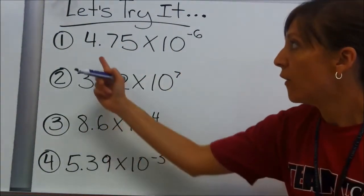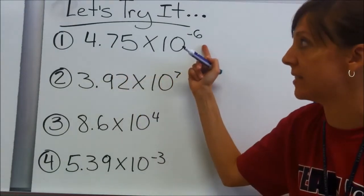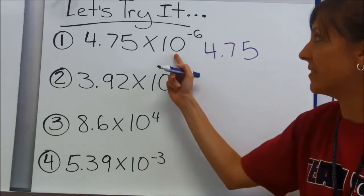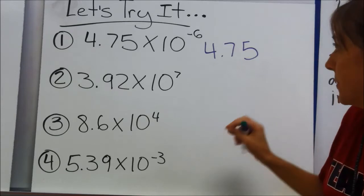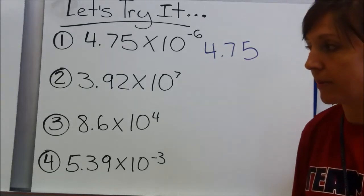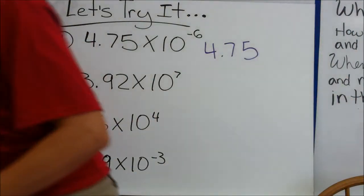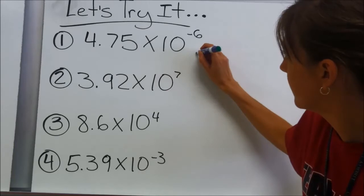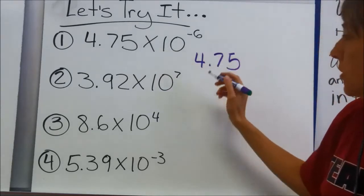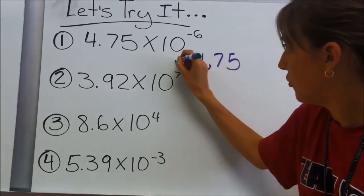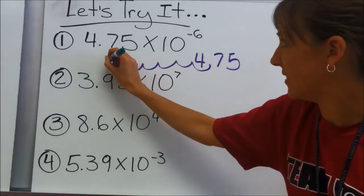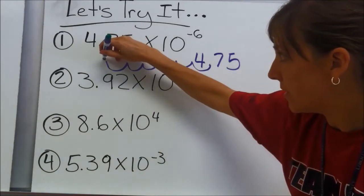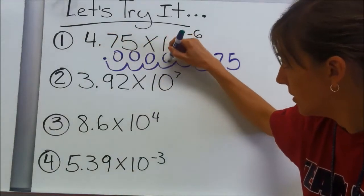Now let's try these together. 4 and 75 hundredths times 10 to the negative 6. I'm going to write my number down. It says times 10 to the negative 6, which tells me I'm going to be moving my decimal to the left, 1, 2, 3, 4, 5, 6 places to the left, because left is least — it's a negative exponent. I move to the left towards negative numbers. I put my decimal here and fill in the place value spots with a 0.